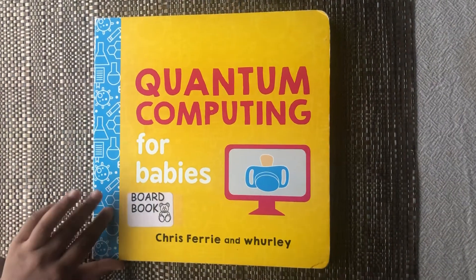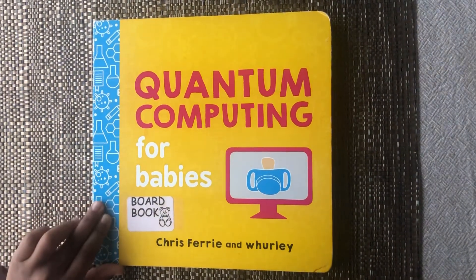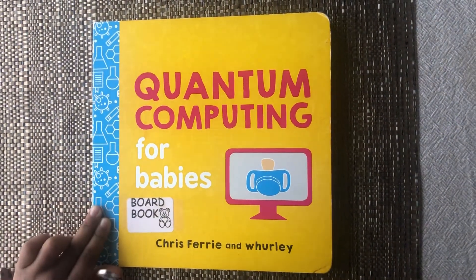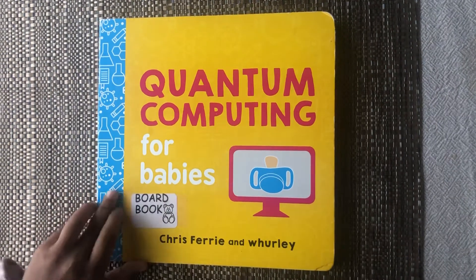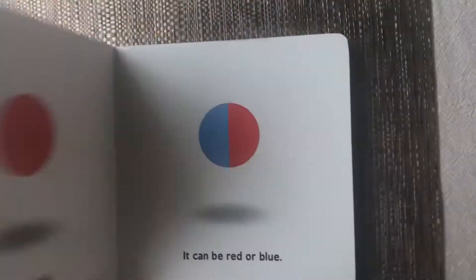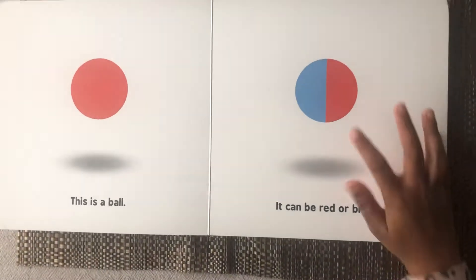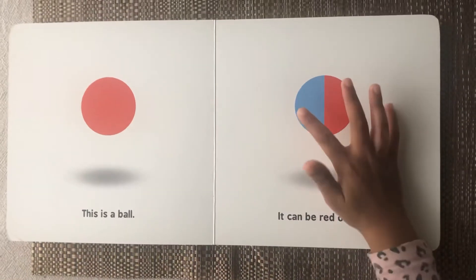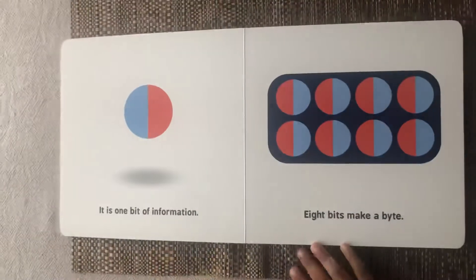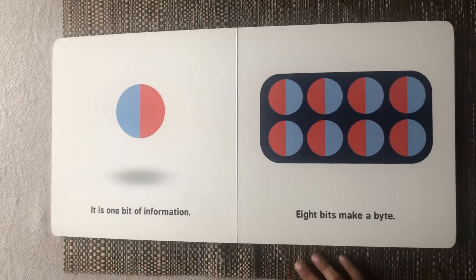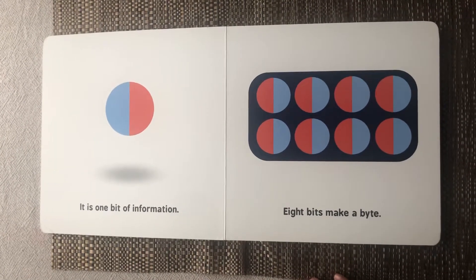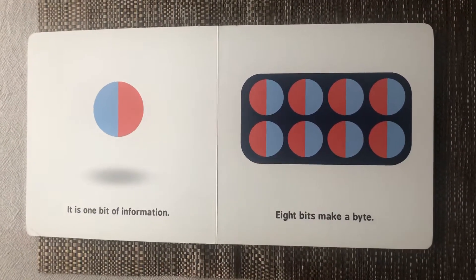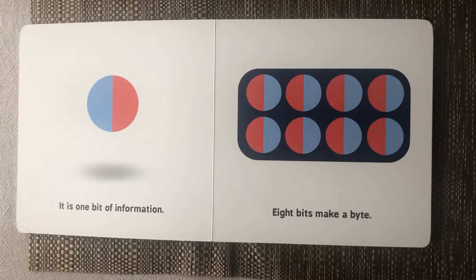Quantum Computing for Babies by Chris Ferrie — a board book. This is a book; it can be red or blue. It is one bit of information. 8 bits make a megabyte.